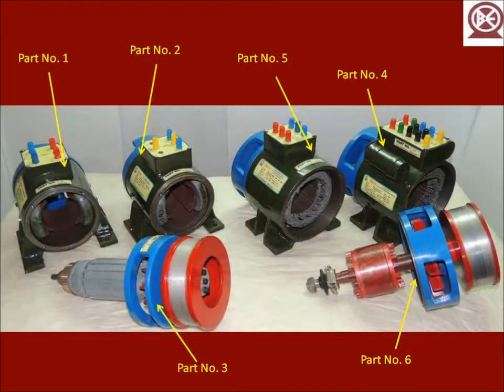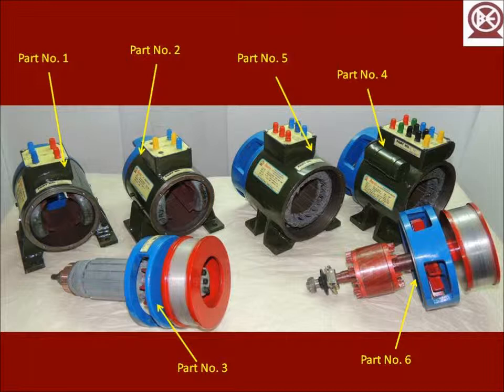In this picture we have the parts of the semi-dissectable electrical machine kit. Part numbers one and two are the stators of the DC motors. Part number three is the rotor of the DC motor. Part numbers four and five are the stators of the AC motors, and part number six is the rotor of the AC motor.